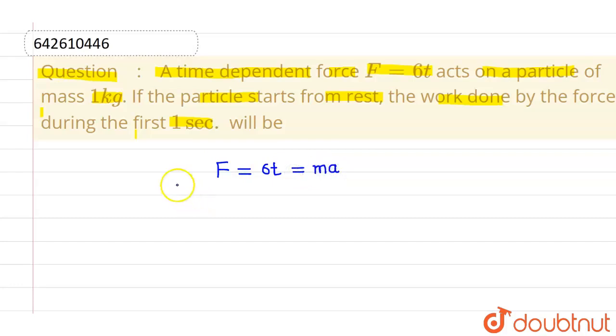Since mass is given as 1 kg, we have this as 1 into acceleration, and this also equals acceleration. So acceleration equals 6t.